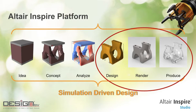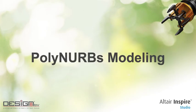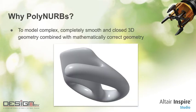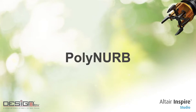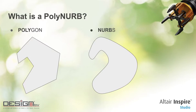Let's talk about PolyNURBS modeling first. Why would we use PolyNURBS modeling? We would use it to model complex but completely smooth and closed 3D geometry that we can combine with mathematically correct geometry. The word PolyNURBS actually consists of two words: Polygon and NURBS. Both are shape representations generated by a computer.